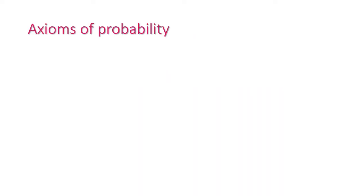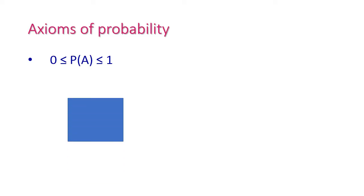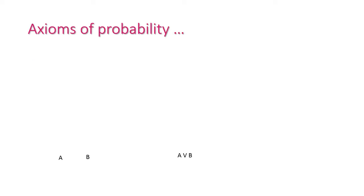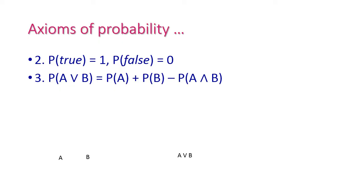Before entering into Bayes rule, we will recollect something about axioms of probability, because this is very basic and important. The first axiom is: 0 ≤ P(A) ≤ 1, where A is any random variable. The second axiom is P(true) = 1 and P(false) = 0. The third axiom is P(A ∪ B) = P(A) + P(B) − P(A ∩ B).